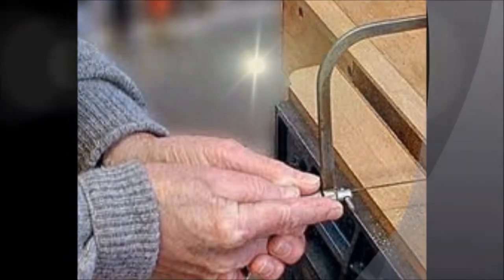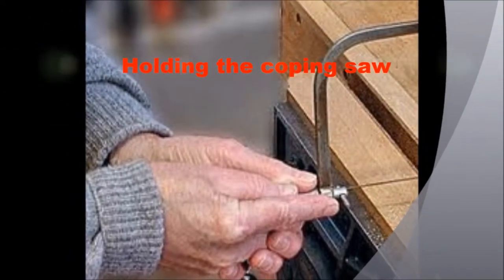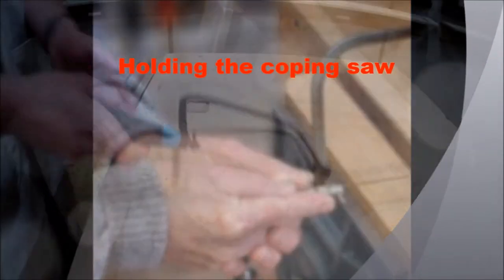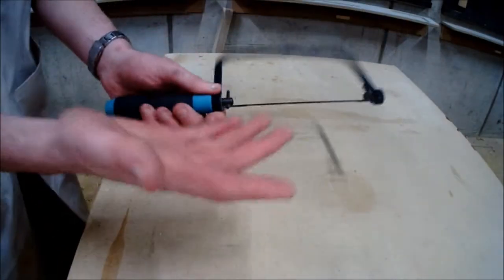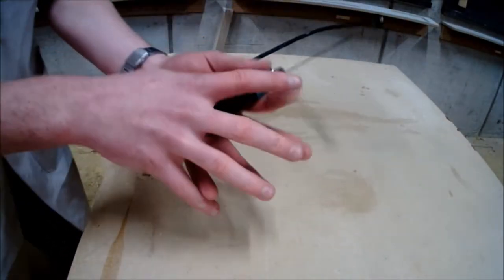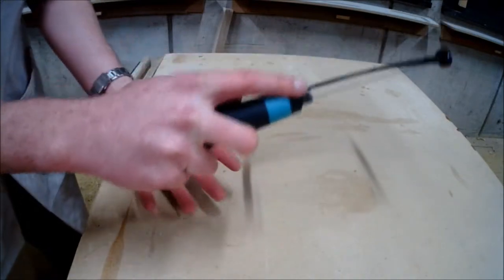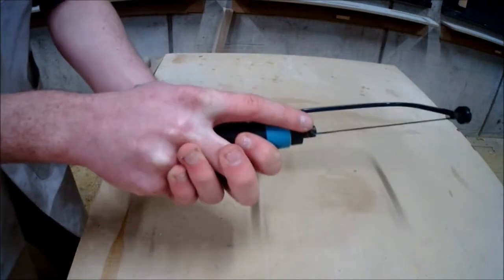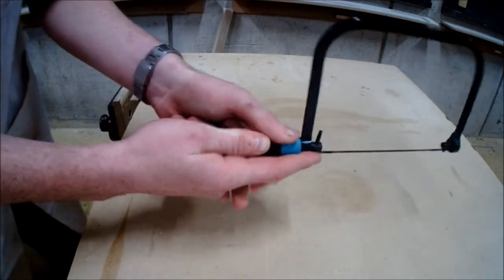When holding the coping saw it's important that we use both hands for good control and accuracy. We hold it like a golfer holding a golf club, and it can also relate to the use of the tenon saw with the finger pointing out, which relates to the pistol grip.